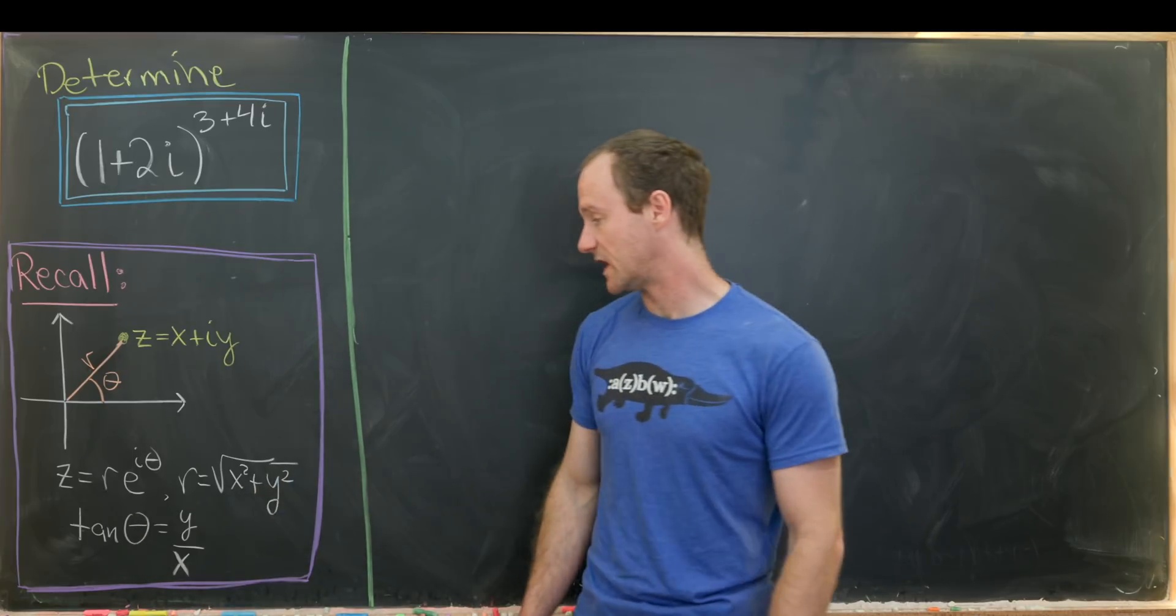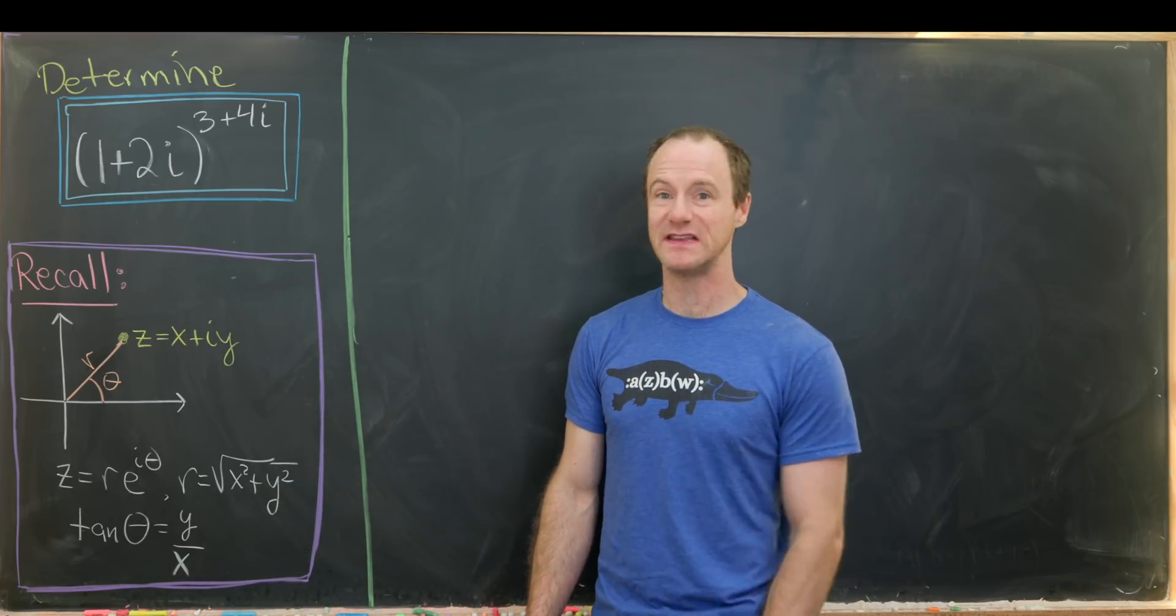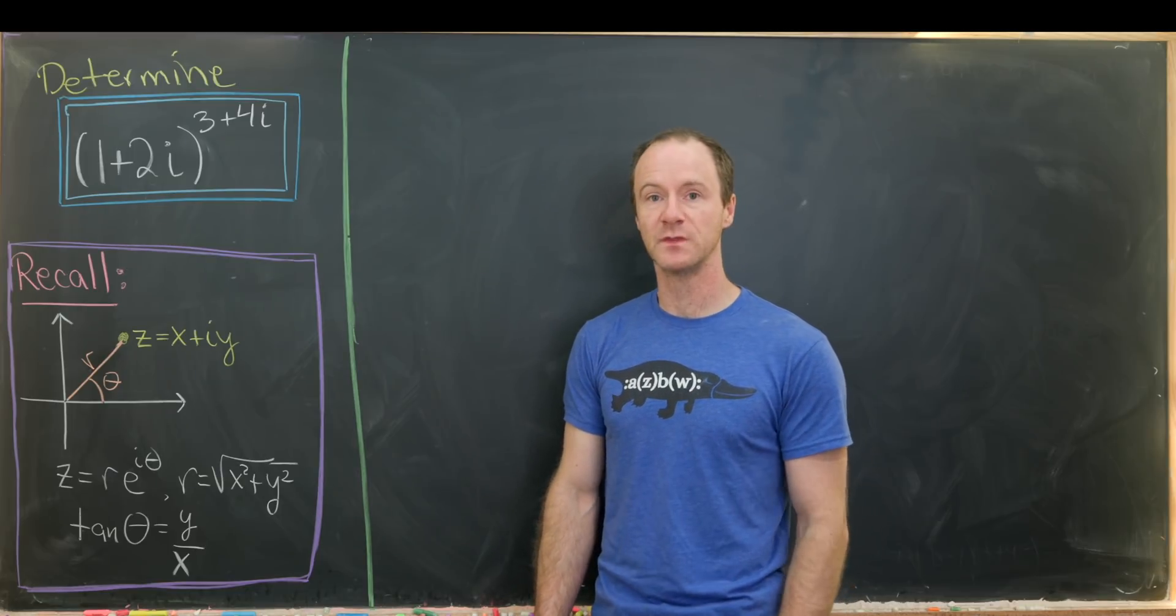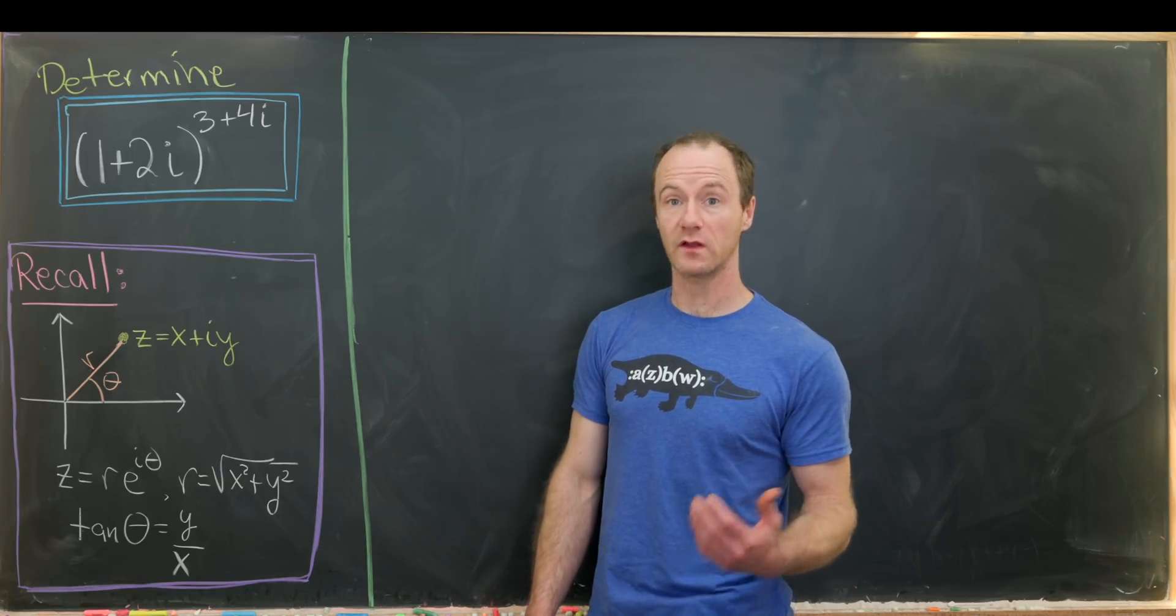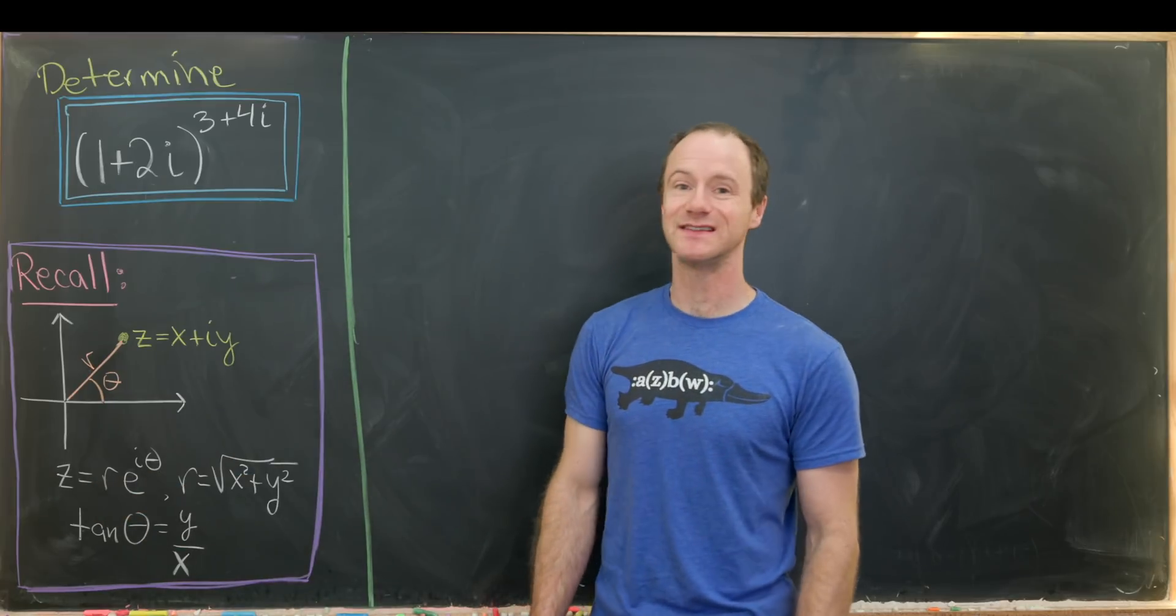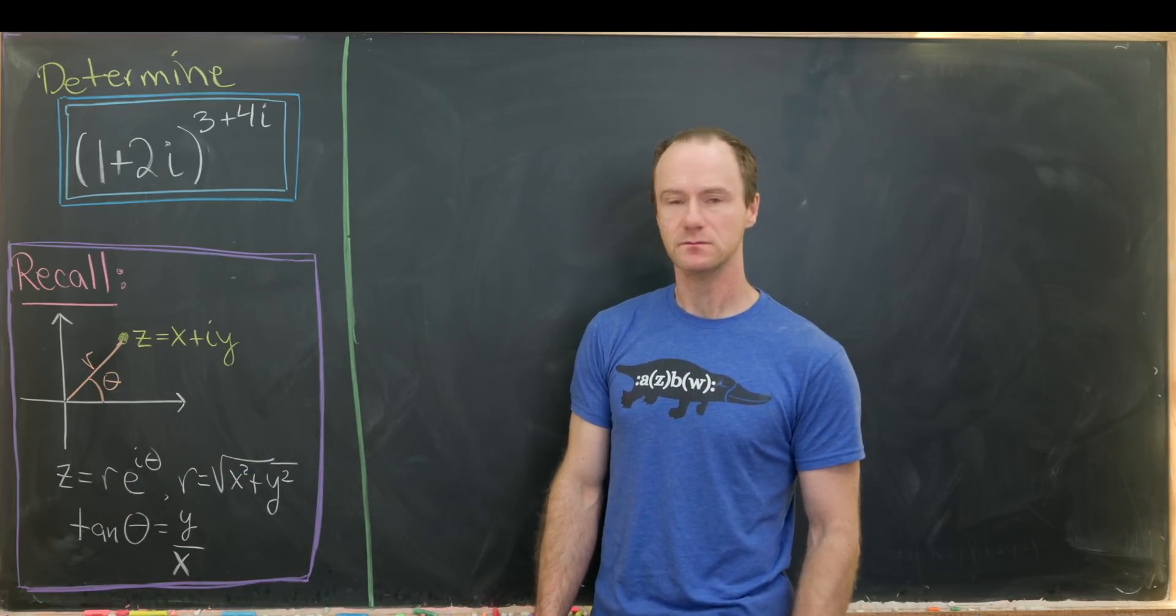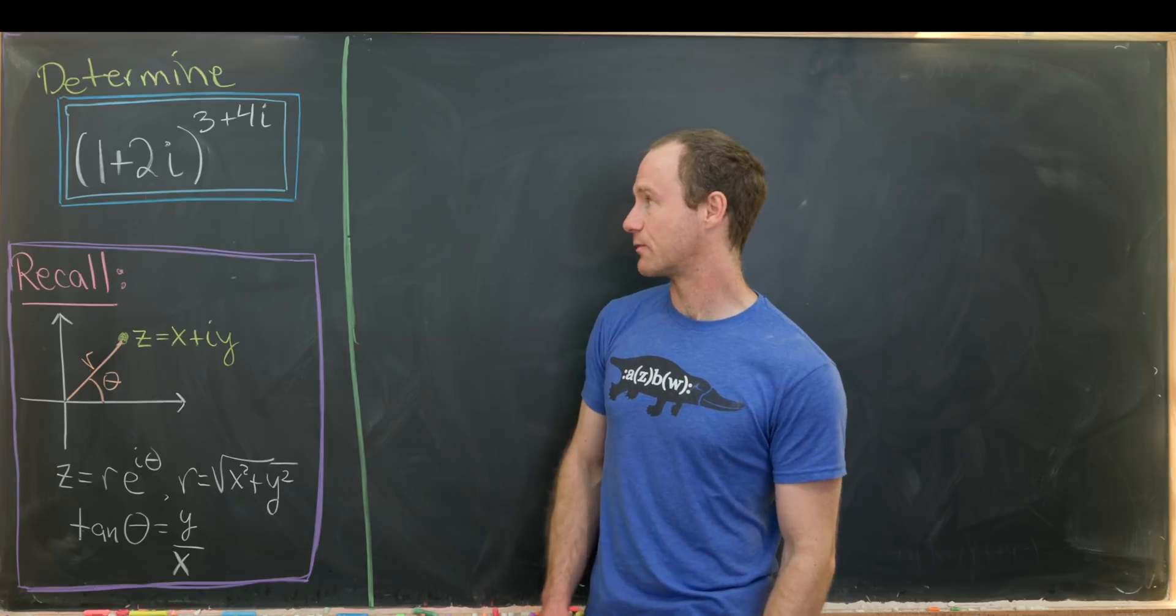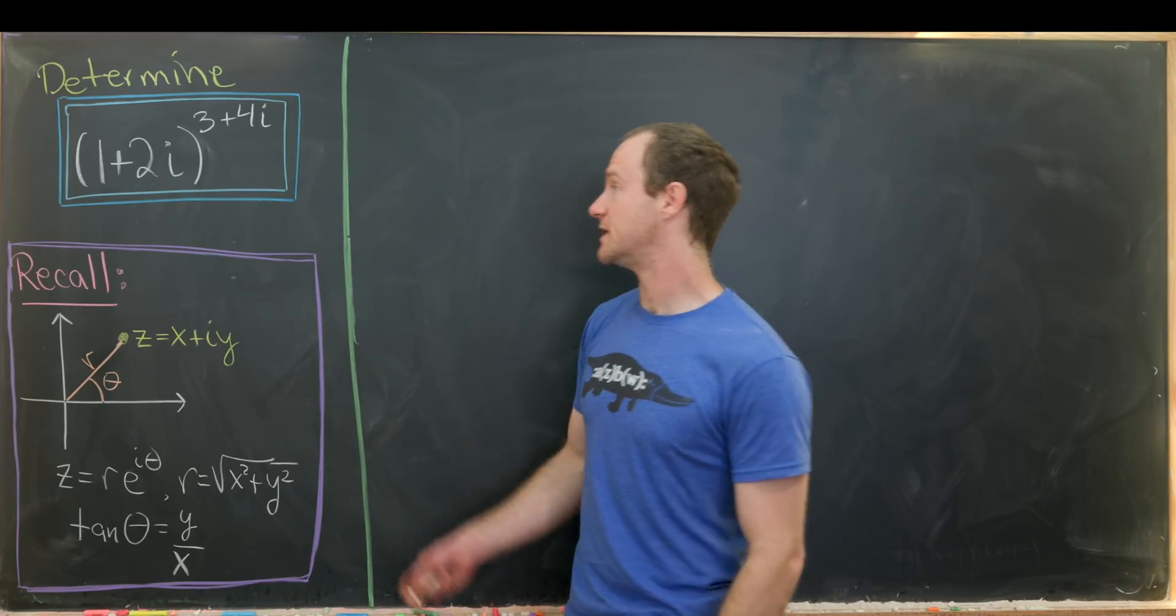And then we have tangent of theta equals y over x. That's by the definition of the tangent function as opposite over adjacent. Furthermore, because of Euler's formula, we can write z as re to the i theta. So that's good. Now that we've got this setup remembered, let's jump into our problem.